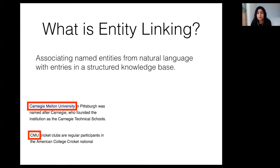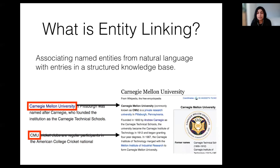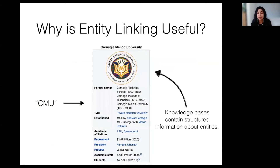For example, we have these two sentences here that contain the entity Carnegie Mellon University. As seen here, the same named entity can have different surface forms. The goal of the entity linking system would be to identify the appropriate Wikipedia entry for the named entity mentions. Knowledge bases typically contain a large amount of information about each entity in a structured form — for example, the info box on Wikipedia always contains specific details about entities such as the capital and the population of a country. Grounding named entity mentions from text to a knowledge base through entity linking is useful because having this structured information can help several downstream applications like information retrieval, semantic search, and document understanding.